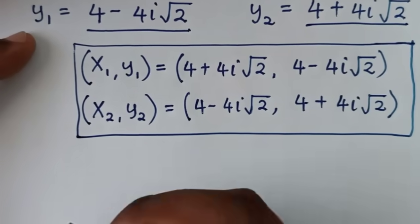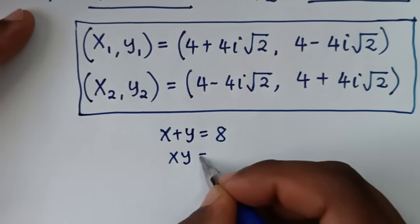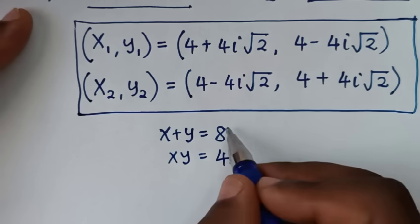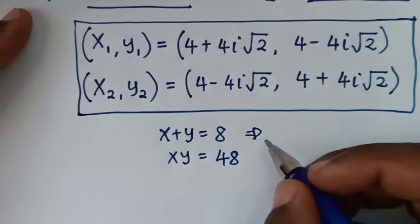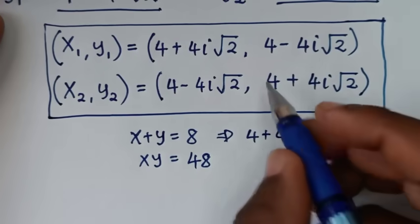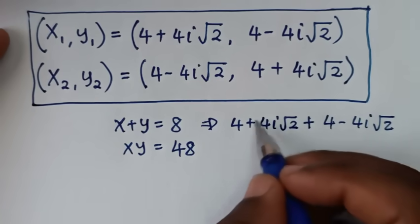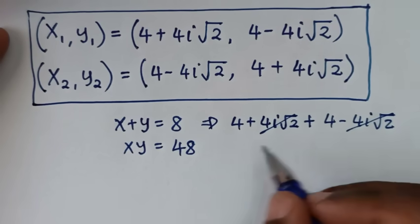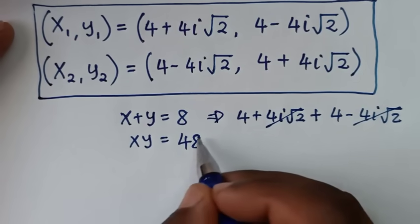Now let's check this solution if it is correct. From our problem, we have x plus y is equal to 8, and x times y is equal to 48. Let's use the first equation: x plus y is equal to 8. From the first solution, it will be 4 plus 4i square root of 2 plus 4 minus 4i square root of 2. This 4i square root of 2 minus 4i square root of 2 cancel, so it will be 4 plus 4, which is 8.